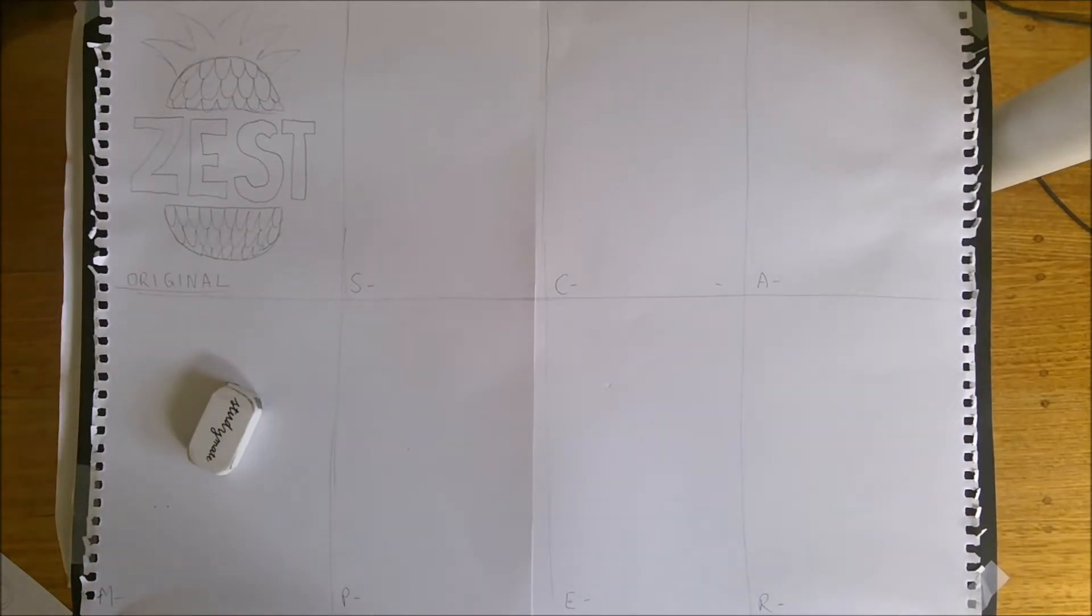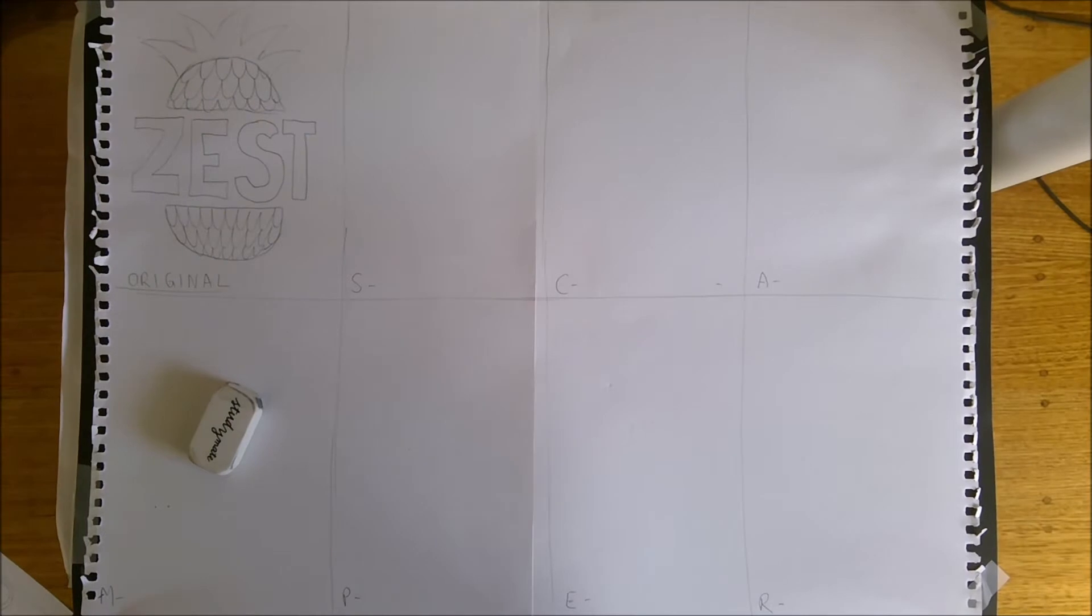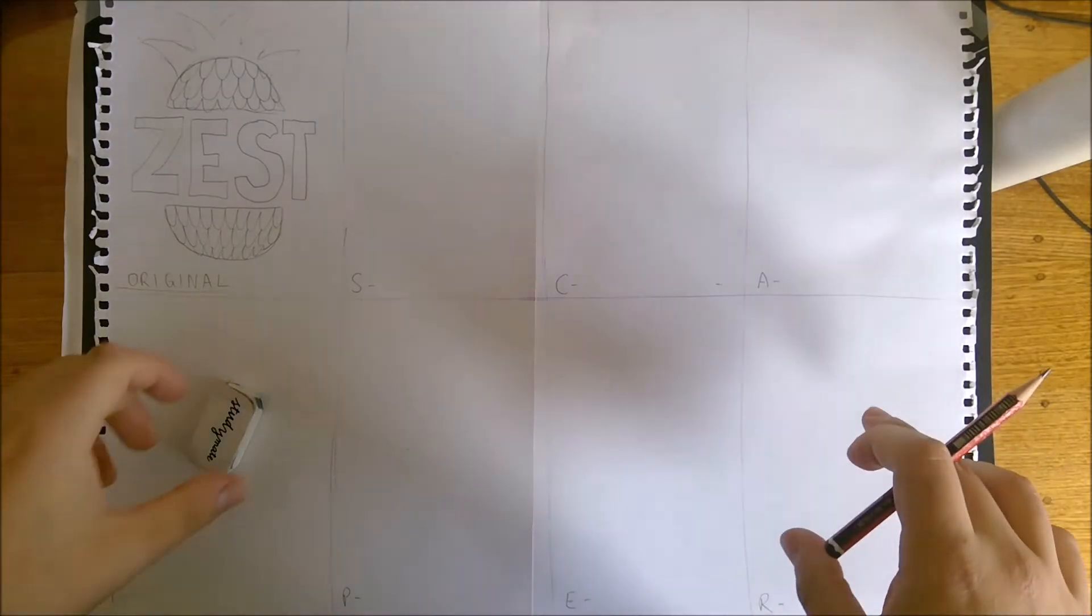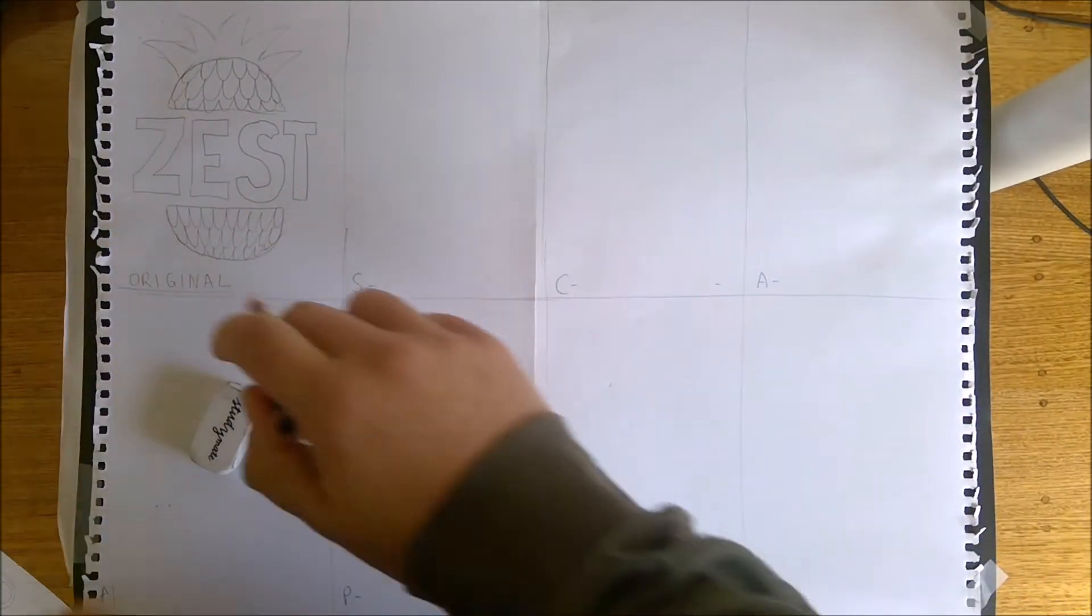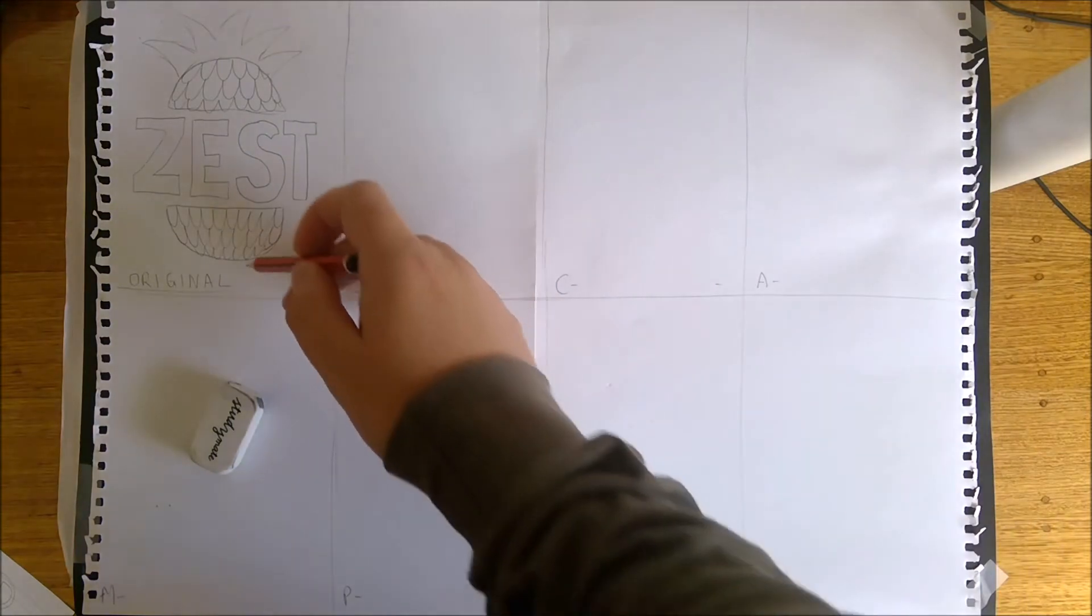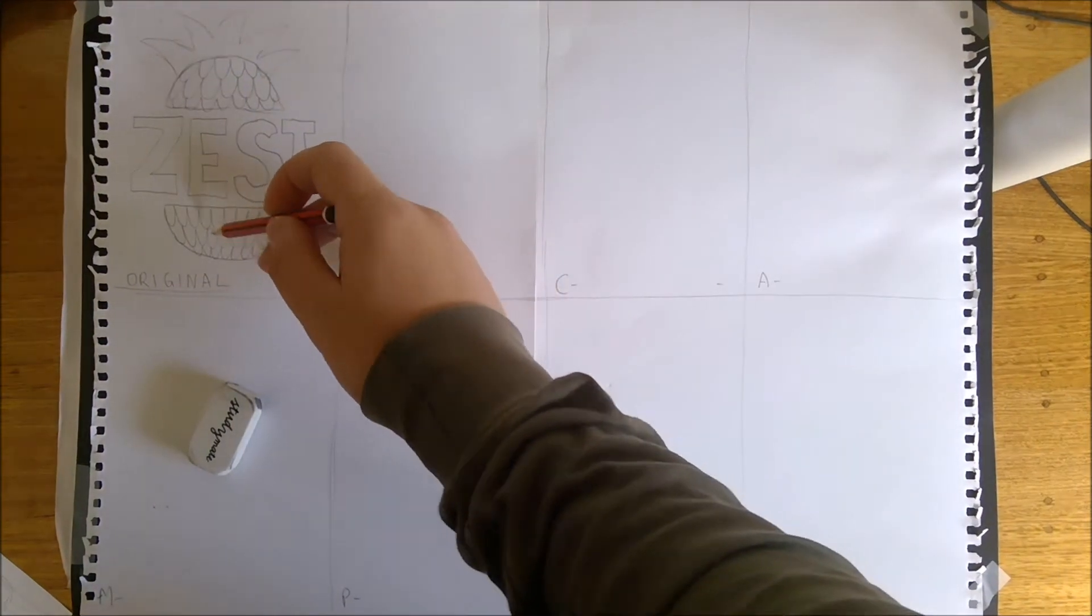Hey guys, in this video I'm going to be showing you how to go through the SCAMPER method of designing when it comes to creating logos for your cafe design. So what I've done is I've set up an A3 page and divided it into eight different sections.